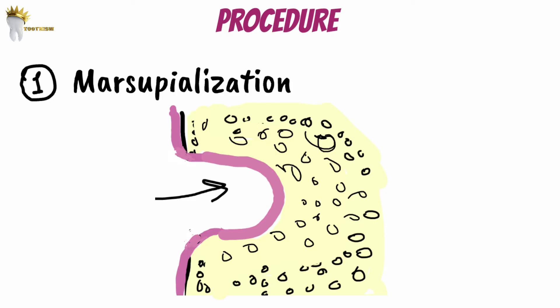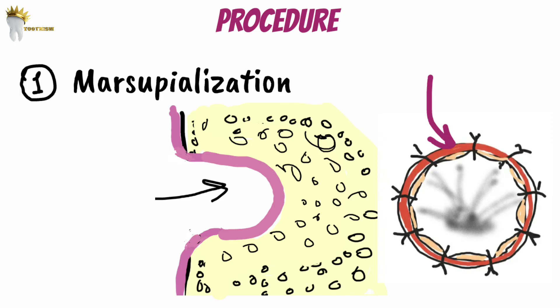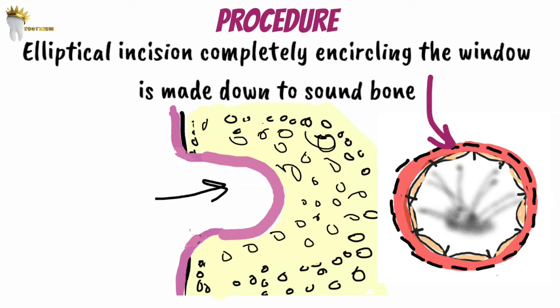The initial incision in this case is going to be different from how we do it in a standard enucleation. After marsupialization, the cyst has a common epithelial lining with the oral cavity. This is the epithelial bridge between the cystic cavity and the oral cavity.